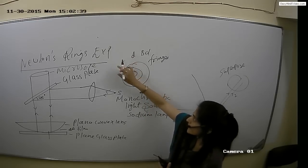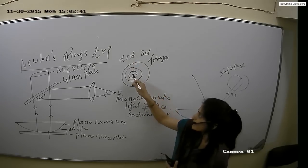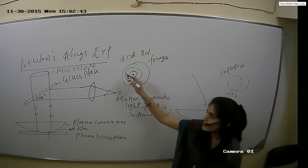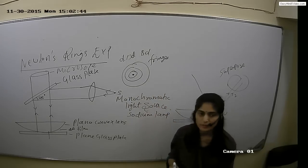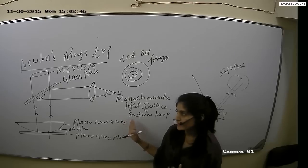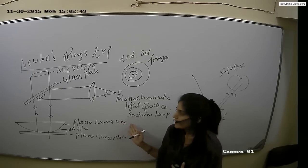The center ring is dark, then bright, dark, bright — alternating. These rings were discovered by Newton, which is why this experiment is called Newton's rings experiment.